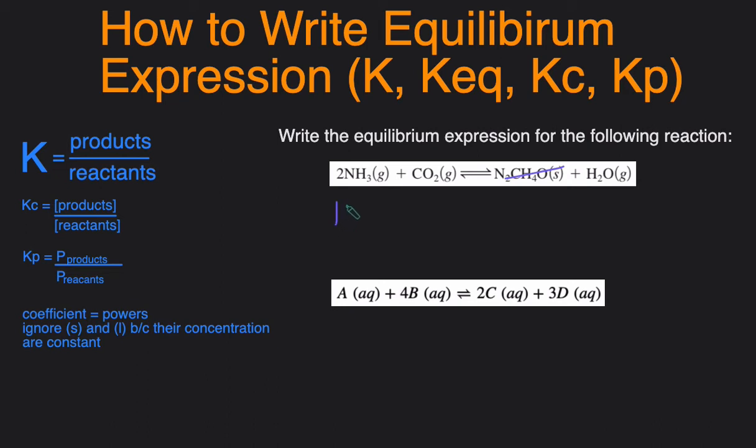I'll show you both. So Kc would be the concentration of H2O raised to the first power because that's a coefficient of 1 divided by the concentration of reactants, which is the NH3 raised to the second power because this coefficient multiplied by the concentration of CO2 raised to the first power.